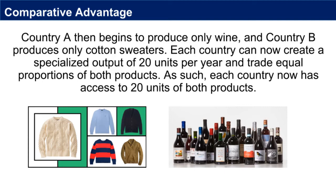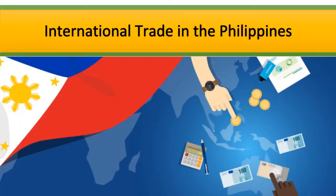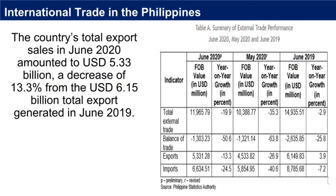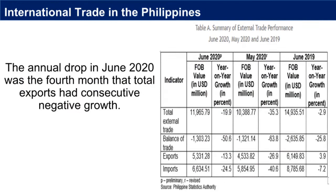As such, each country now has access to 20 units of both products. Regarding international trade in the Philippines, the country's total export sales in June 2020 amounted to US$5.33 billion, a decrease of 13.3% from the US$6.15 billion total export generated in June 2019. The annual drop in June 2020 was the fourth month that total exports had consecutive negative growth. In the previous month, the export value fell at an annual rate of 26.9%, while in June 2019, it gained at a rate of 3.9%.